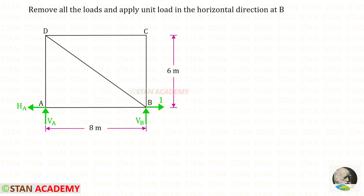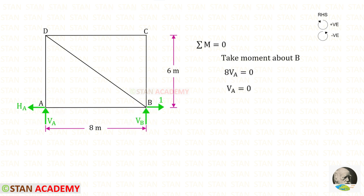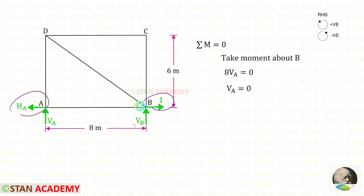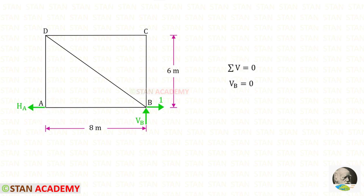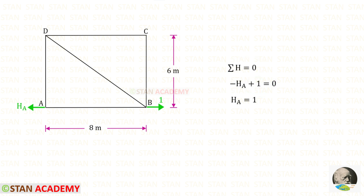Now we have to find the member forces — the values of K. Before finding them we have to find the three reactions. Taking moments about B: Va is acting in the clockwise direction, distance is 8, so 8·Va. For Ha and Vb there is no perpendicular distance, so 8·Va = 0 and Va = 0. Removing Va, applying the vertical equilibrium rule gives Vb = 0; removing Vb also. Applying the horizontal equilibrium rule: Ha acts left (negative), the unit force acts right (positive), so Ha = 1.